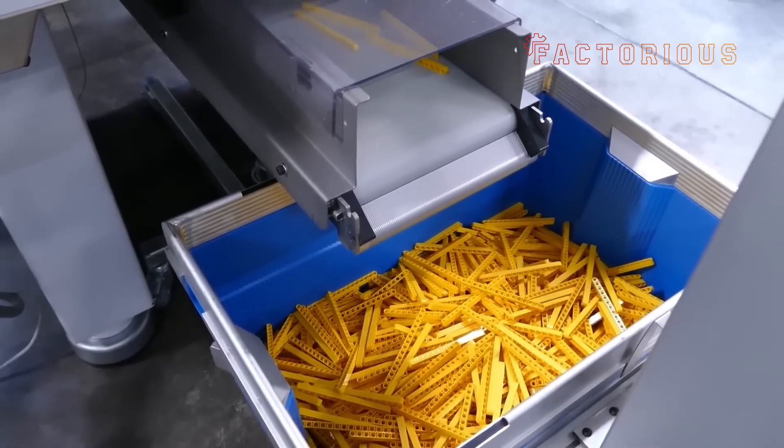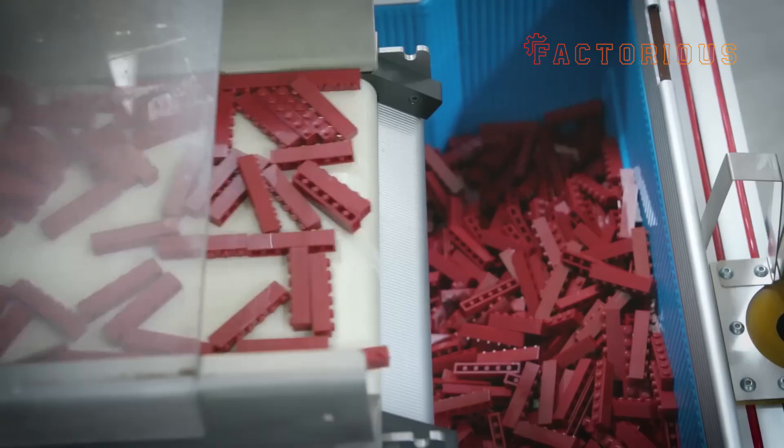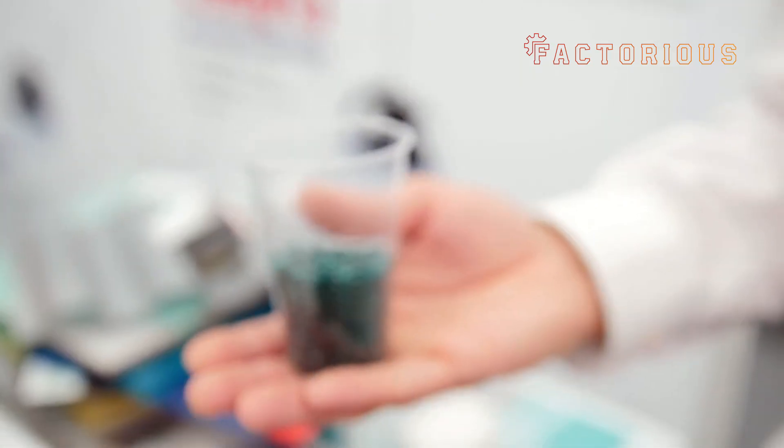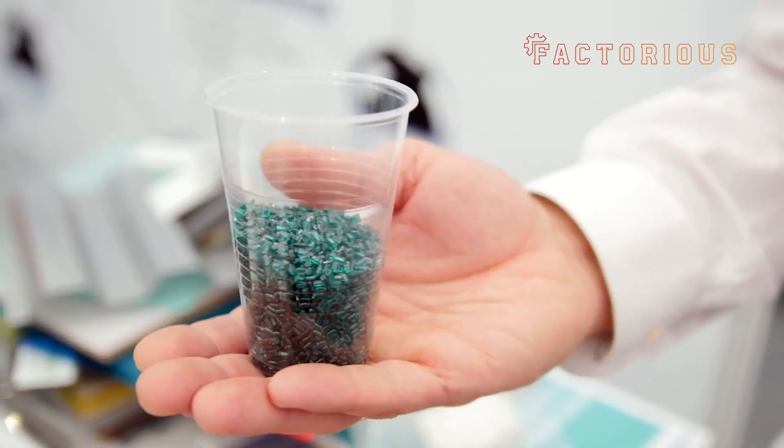ABS is what Lego calls its golden material. It's strong, colorful, and has just the right balance between flexibility and hardness. Basically, if Goldilocks made plastic, it'd be this one.